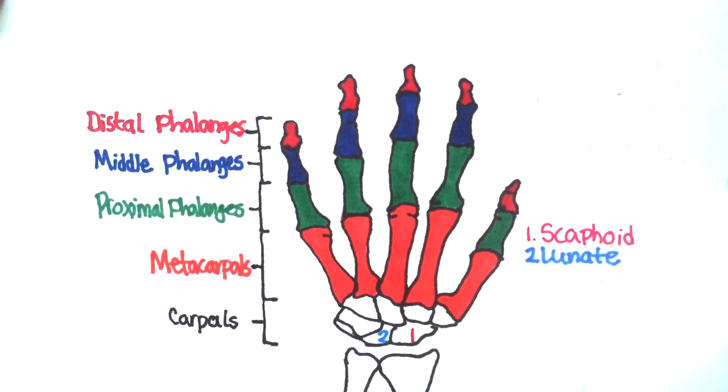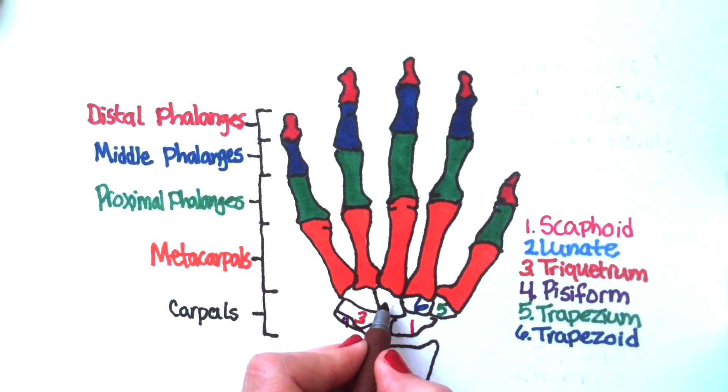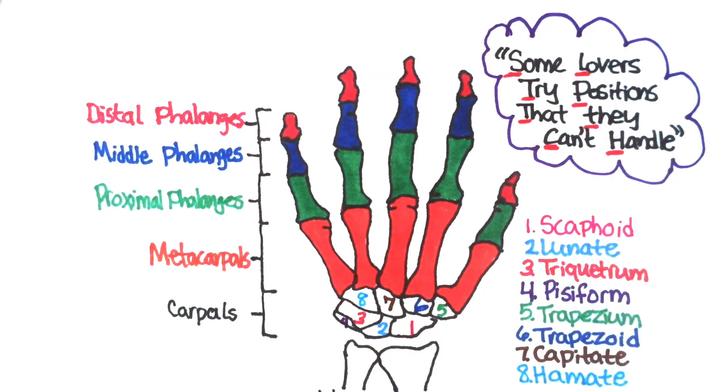There are eight carpal bones, and there's a mnemonic to remember all the eight carpal bones. So S is for scaphoid, L is for lunate, T for triquetrum, P for pisiform,